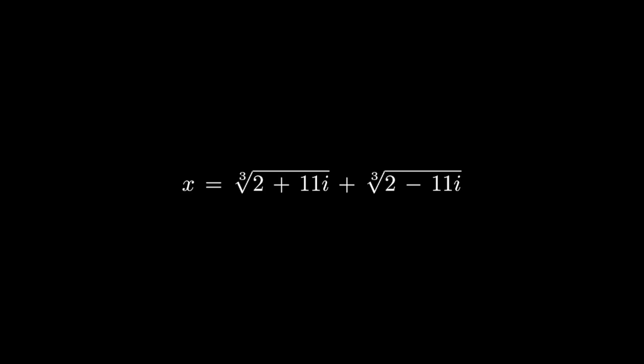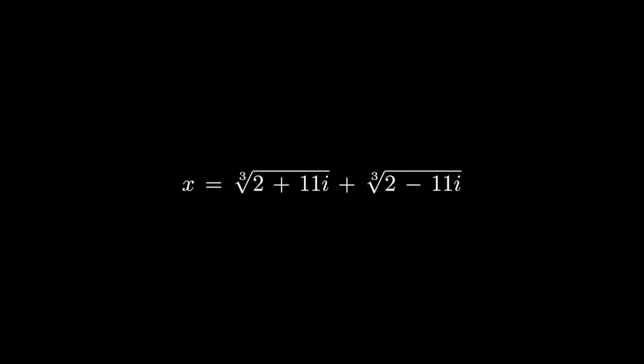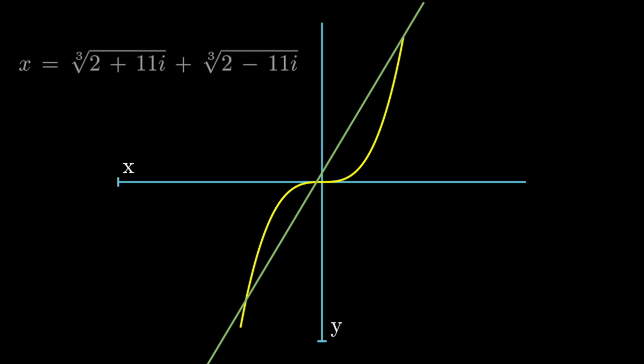We know that this number must be a real value because we can literally see the intersection on the graph. To Bombelli, this was astonishing. Connecting this geometric evidence with algebra leads us to a surprising conclusion. Root of negative 1 is possible and necessary for mathematics.